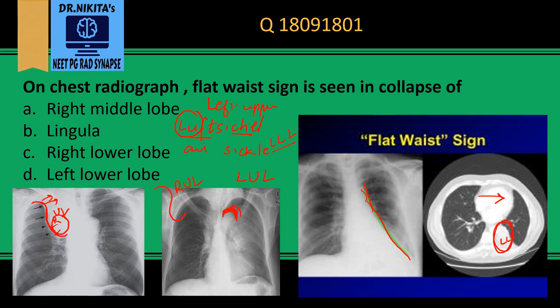To revise: the flat waist sign is seen in left lower lobe collapse, the reverse Golden S sign in right upper lobe collapse, and the Luft Sichel sign in left upper lobe collapse.